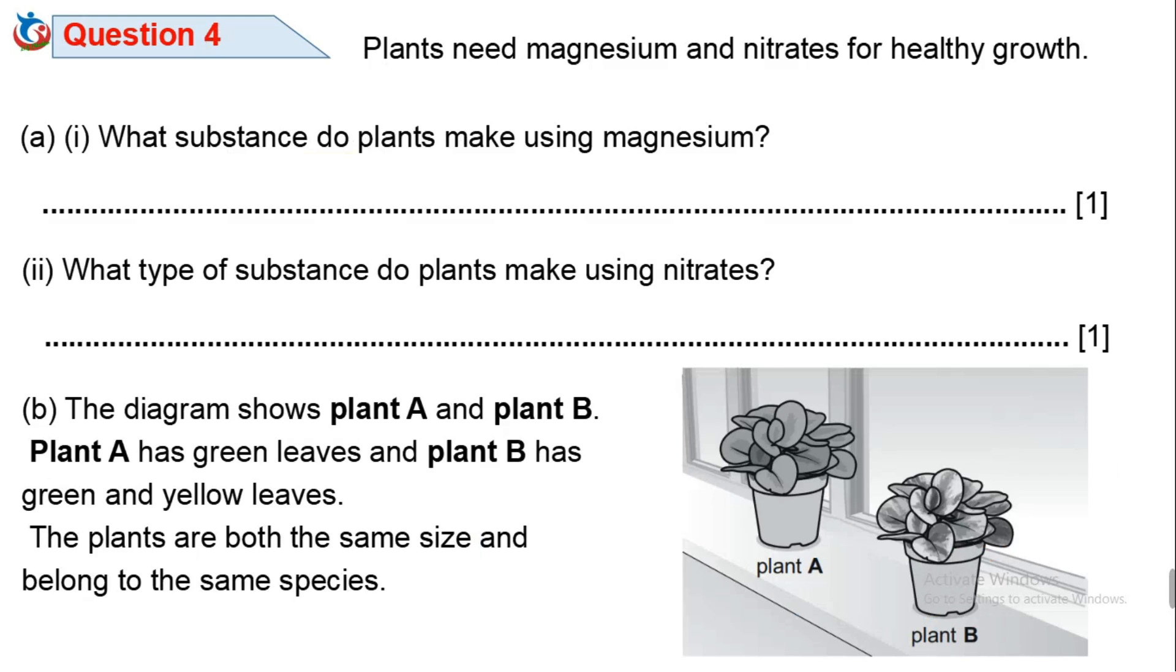Question 4. Plants need magnesium and nitrate for healthy growth. 4A1. What substance do plants make using magnesium? Magnesium is an essential nutrient used by plants in formation of chlorophyll. Magnesium is used for the formation of chlorophyll. Question 4A2. What type of substance do plants make using nitrates? Nitrates are required by plants in production of protein or amino acids. Nitrates are used for the production of protein or amino acids.